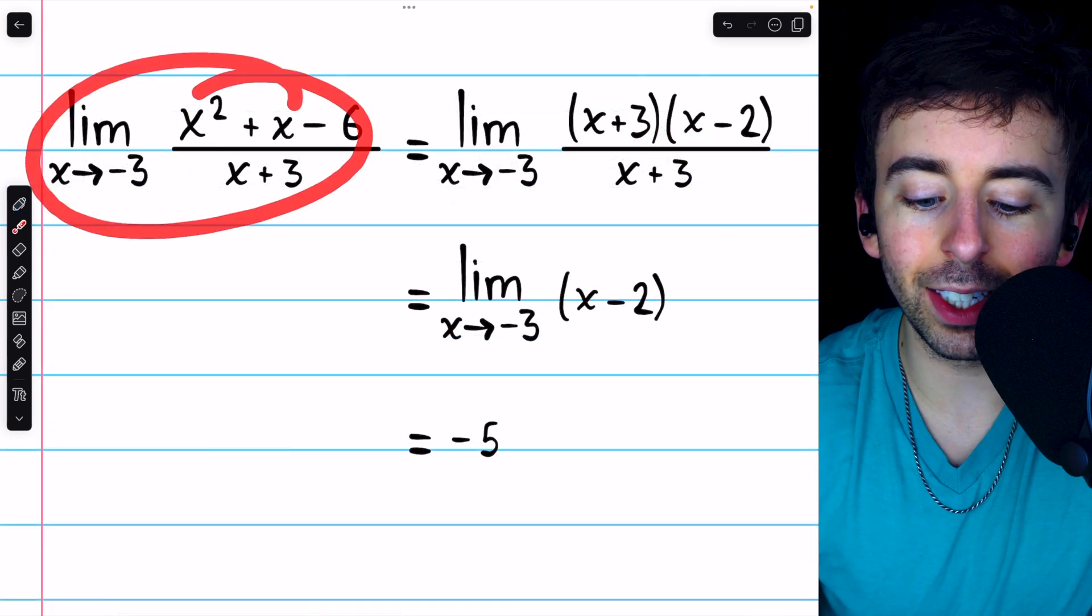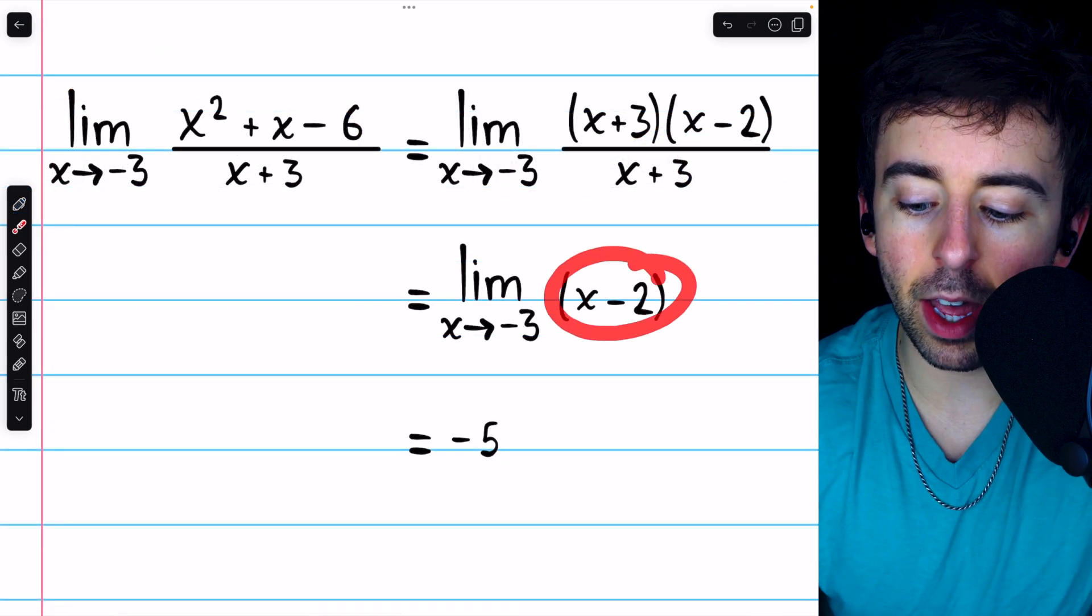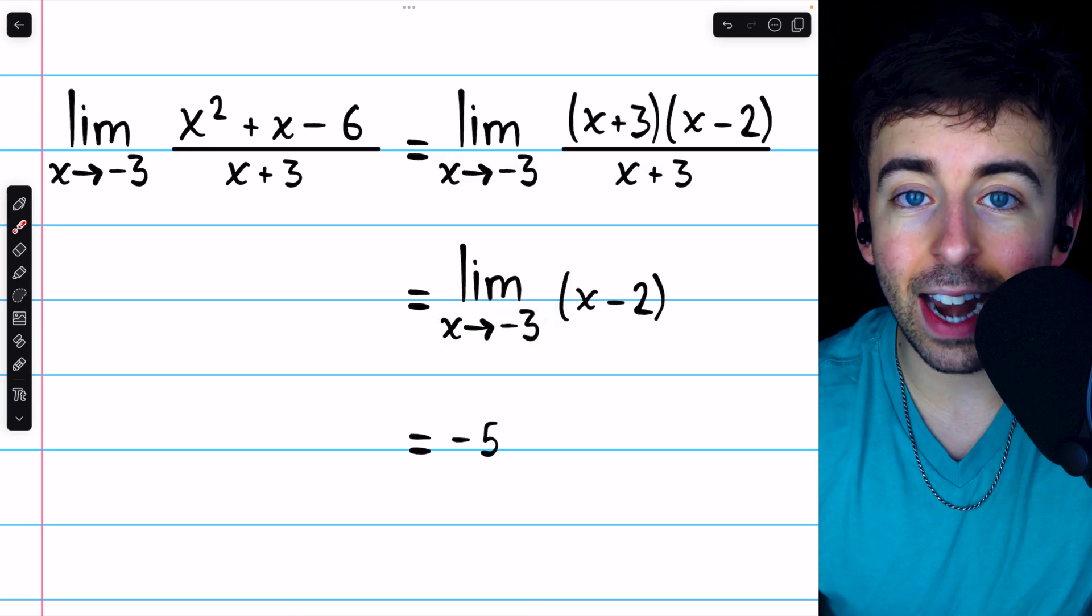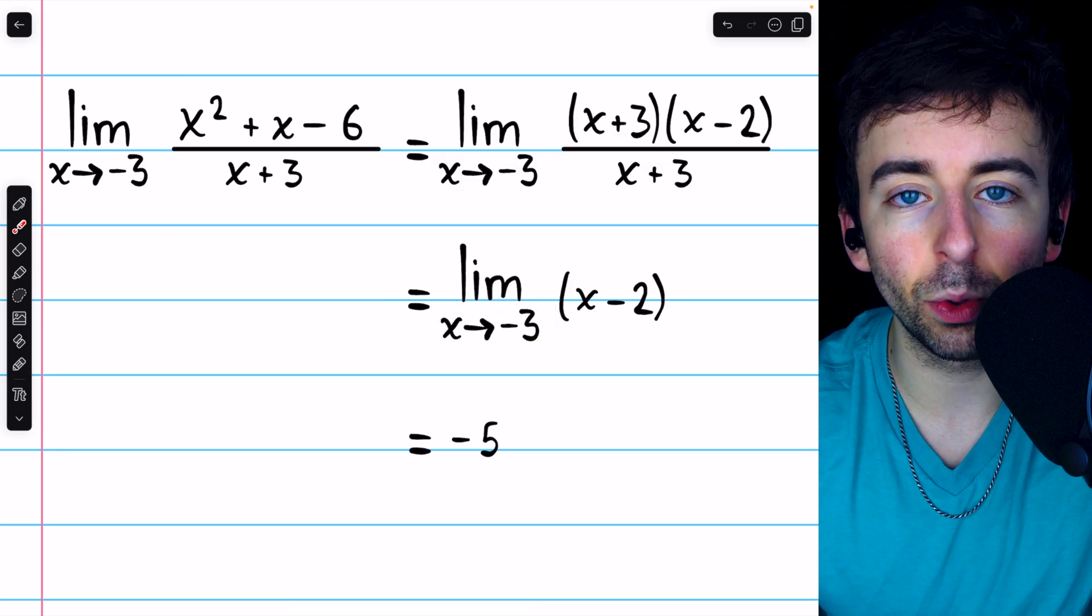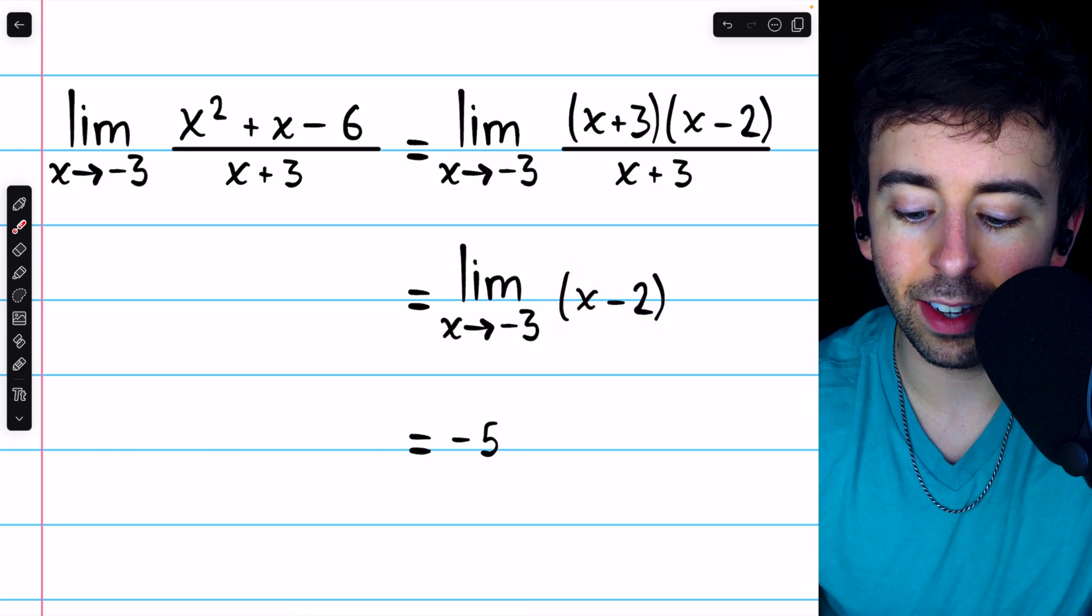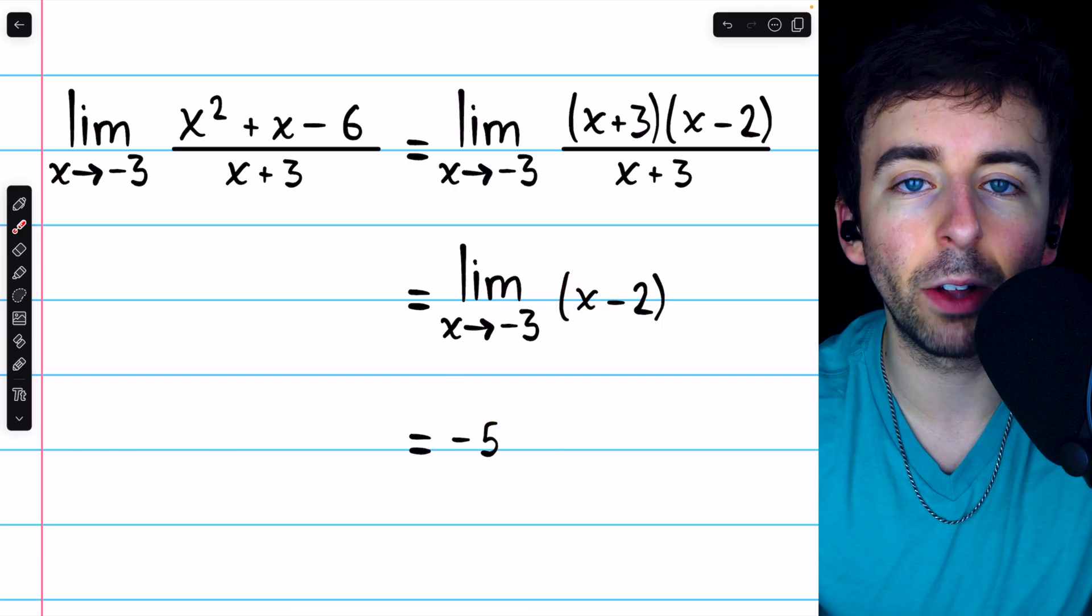Thus, our original limit is the same as the limit of x minus 2 as x approaches negative 3. And now we can just plug in x equals negative 3. Negative 3 minus 2 is negative 5. And that is the value of the limit.